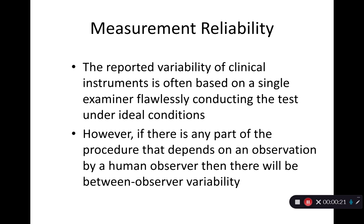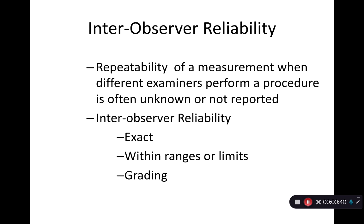We always want to be measuring reliability of our testing. The reported variability of a clinical instrument is often based upon a single examiner's flawlessly conducting the test under ideal conditions. However, if there's any part of this procedure that depends on an observation by a human observer, then it'll be between observer variability — inter-observer reliability. Repeatability of a measurement when different examiners perform a procedure is often unknown or not reported.